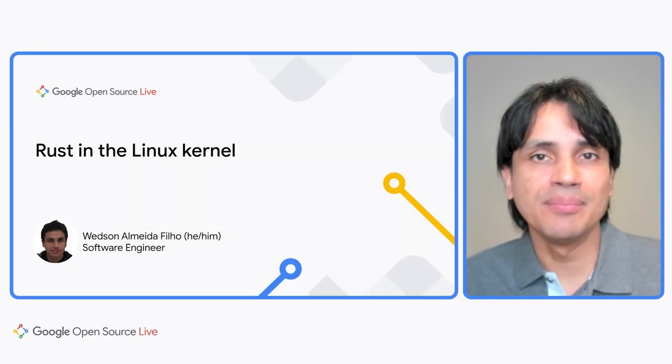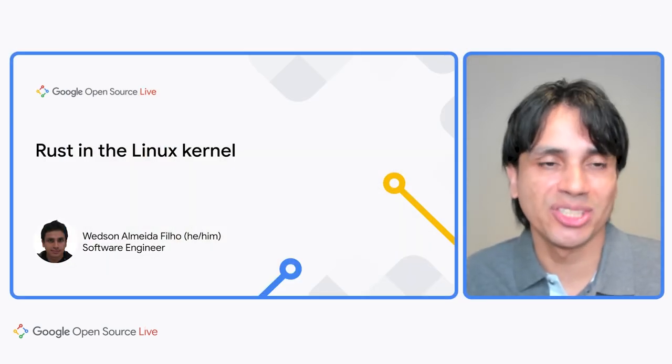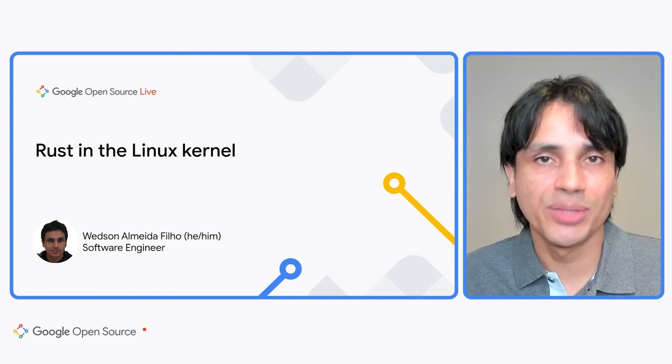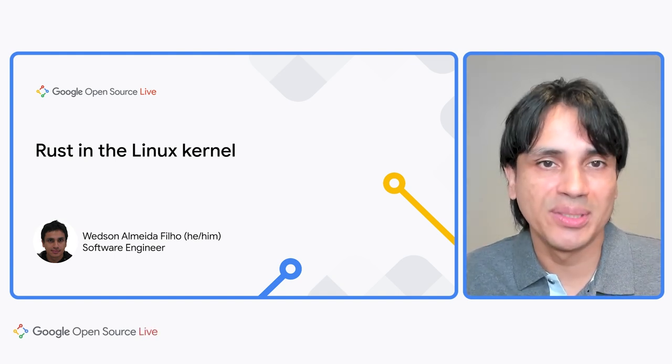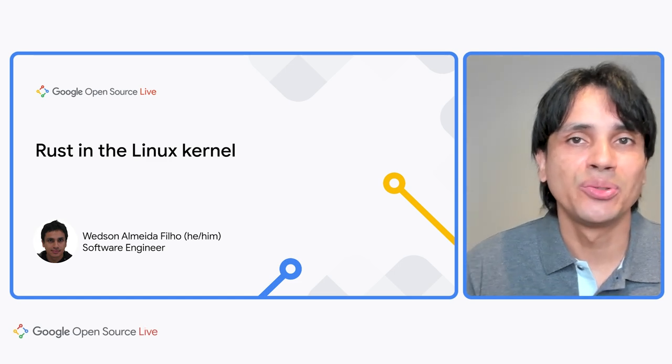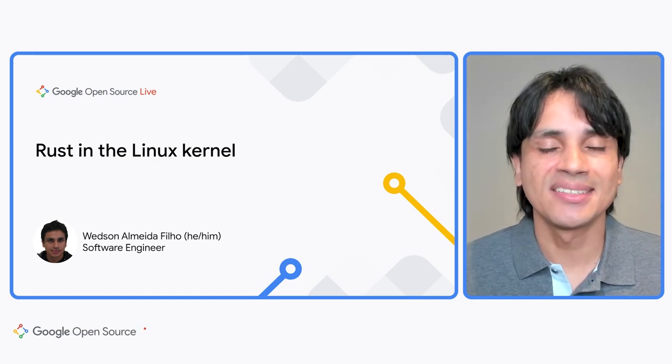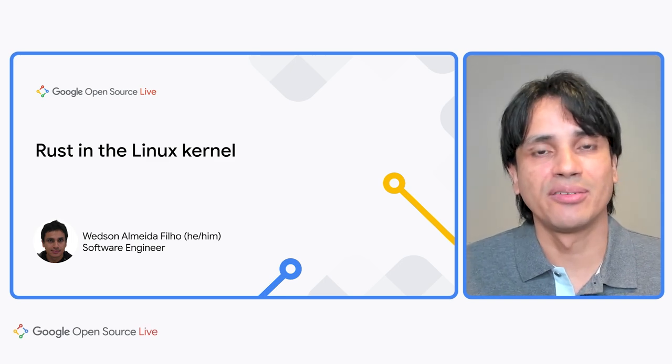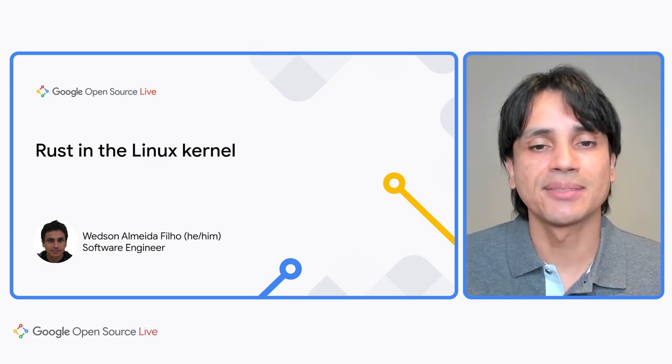Hi there, I'm Wetson. I'm a software engineer at Google and the maintainer of the Rust for Linux project. Today I'm going to tell you a little bit about this project: what we're doing, why we're doing this, how we're doing this, and along the way I'm going to show you a few examples that showcase the interfaces we built. Then we're going to talk about some of the challenges we faced and finish up with our plans for the future. Let's get started.